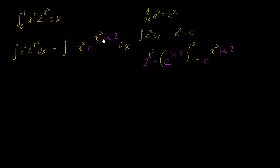You might be saying: maybe u-substitution could be at play here, because I have this kind of crazy expression — x to the third times the natural log of two — but what's the derivative of that? Well, that's going to be three x squared times the natural log of two, or three times the natural log of two times x squared. That's just a constant times x squared. We already have an x squared here, so maybe we can engineer this a little bit to have the constant there as well.